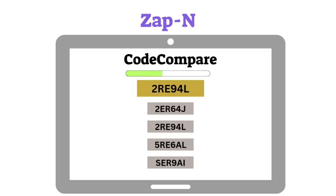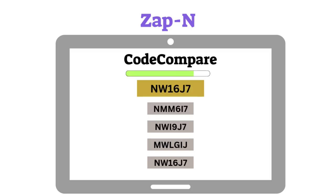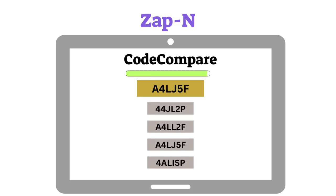Code Compare is a rather simple data-checking test. It presents you with a sequence of numbers and letters followed by four similar sequences. Spot the identical sequence as fast as you can.